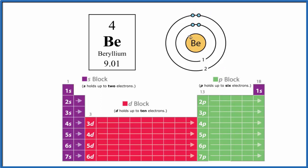If we wanted to write the electron configuration, we'd have 1s² and then 2s². That would be the electron configuration for beryllium.